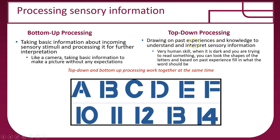Top-down processing starts with drawing on your past experiences, past knowledge, and understanding of the world to interpret sensory information. When it's dark outside and you're trying to read a sign, you can look at the shapes on the signs and put them together based on past experience to read it, because you kind of know what those letters should be. Bottom-up is building your sensory experience from basic data; top-down is applying your knowledge onto sensory information to understand what you're seeing or hearing.